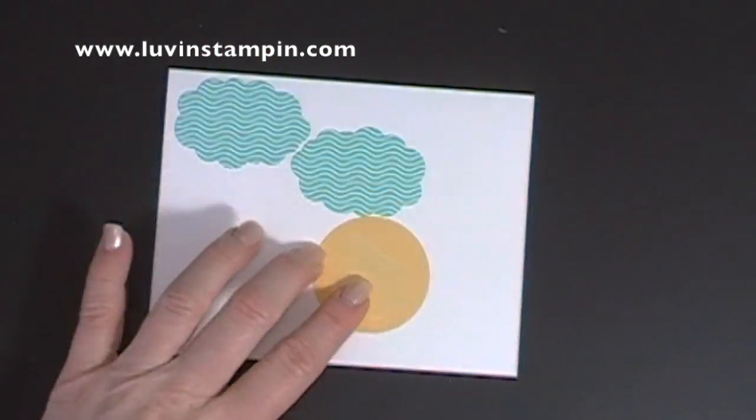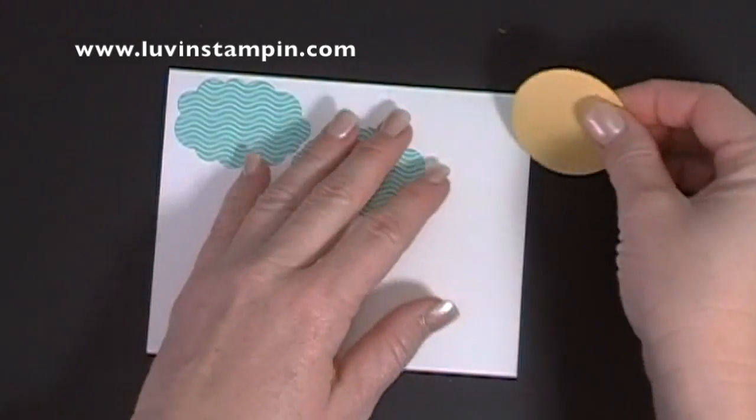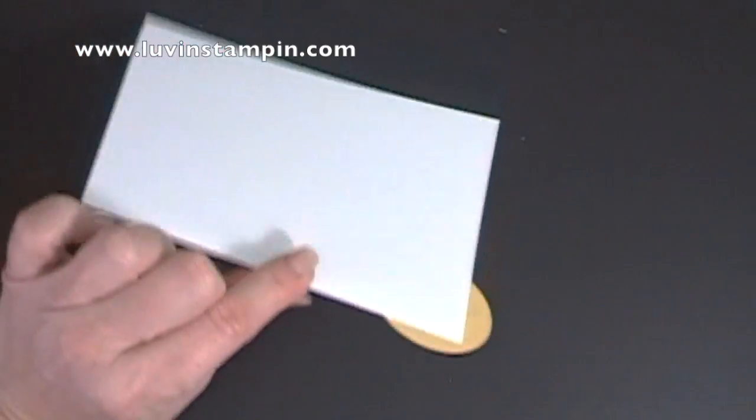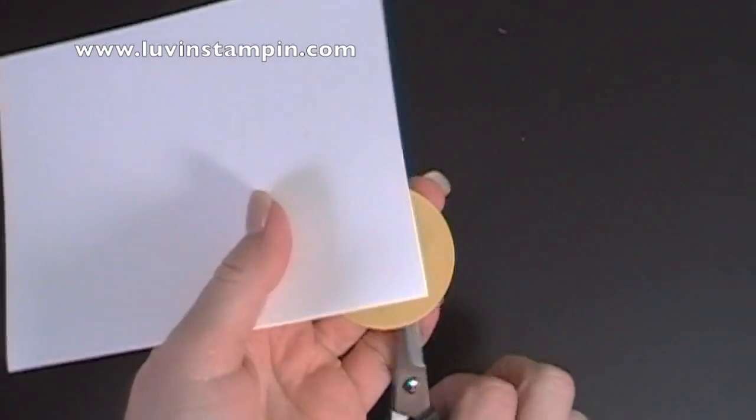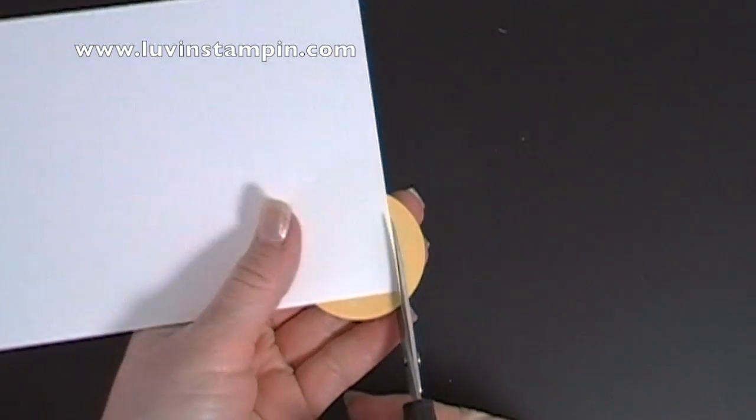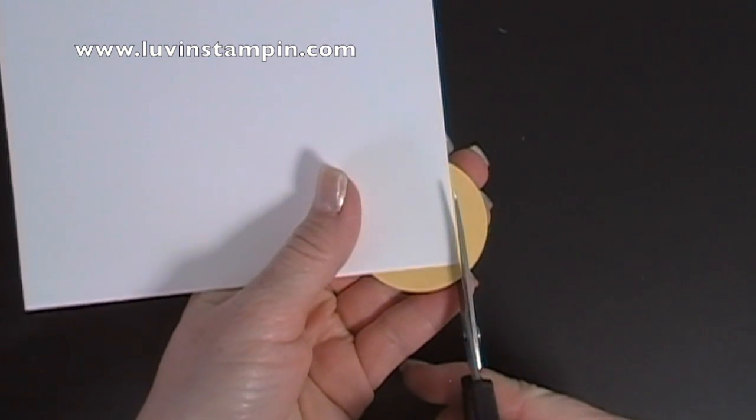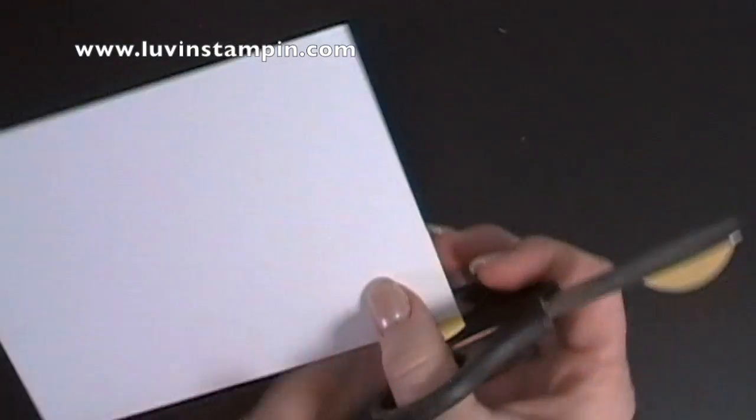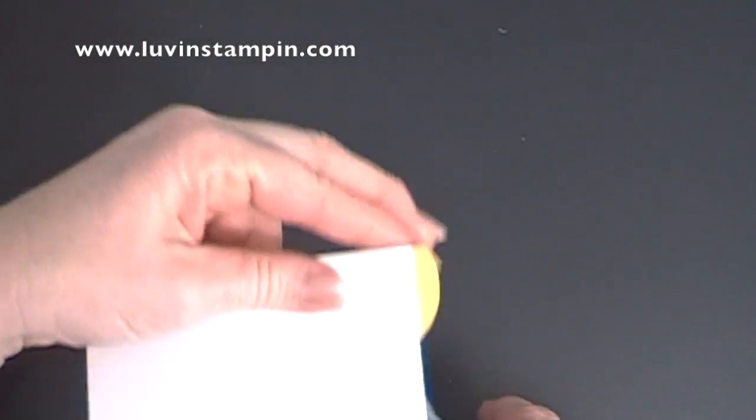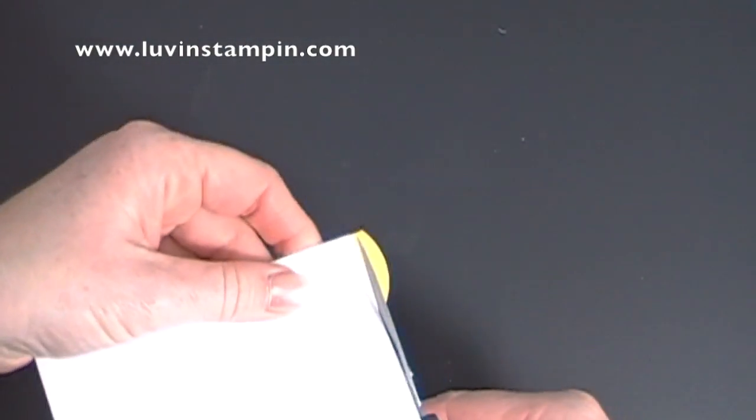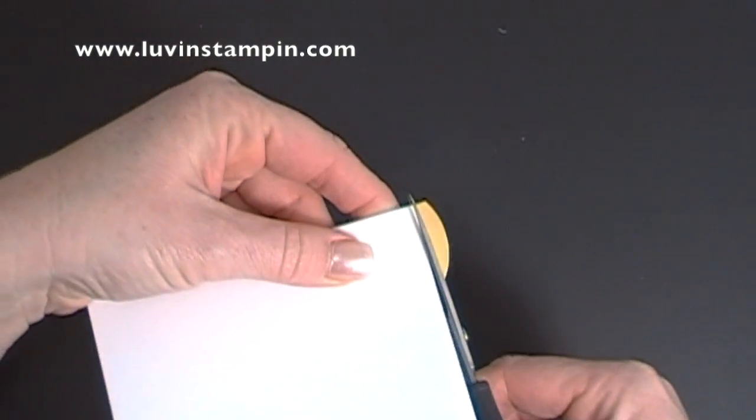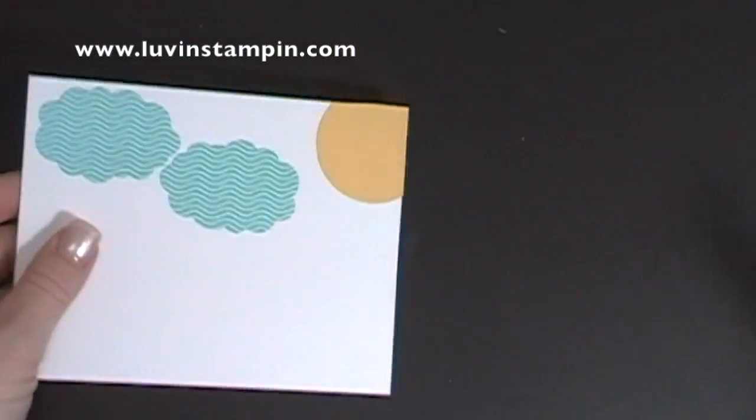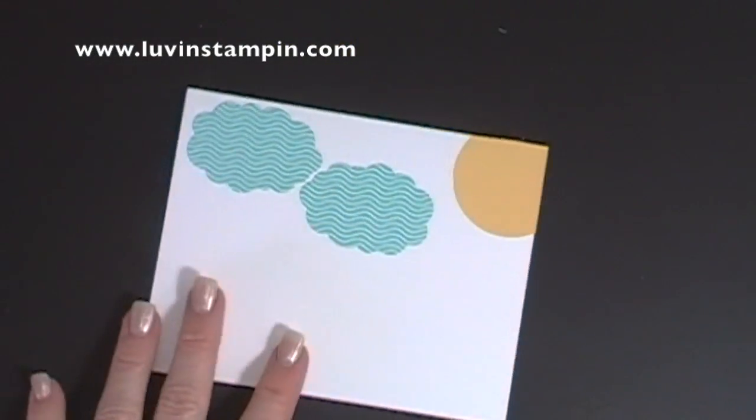So what I did is I just covered the adhesive here on the back, and I put my sunshine about where I wanted it, and then I just flipped my card over, and I took my paper snips, and I trimmed right up against the card base. And I'm going to do that right here, and then that gives you that really nice finished corner there that has your sunshine peeking out of it.